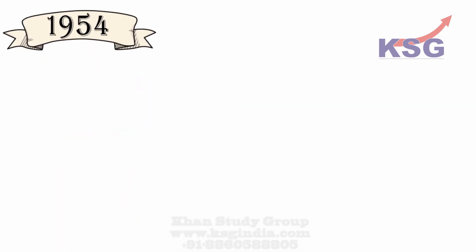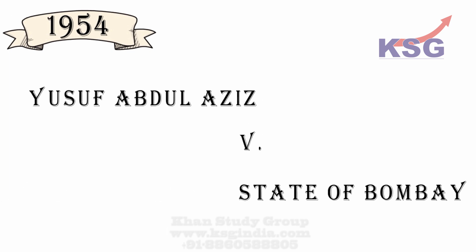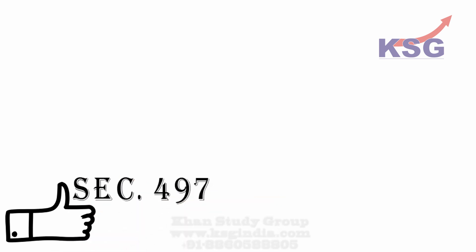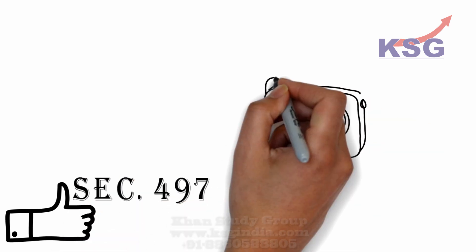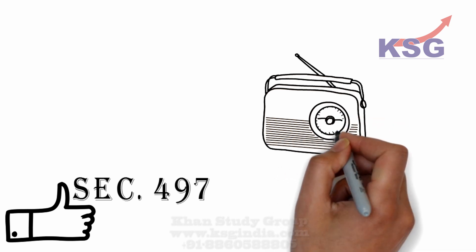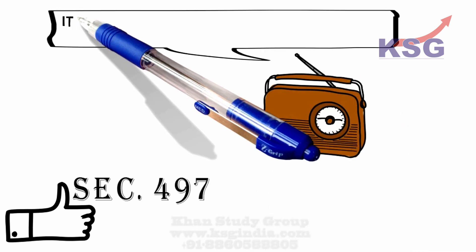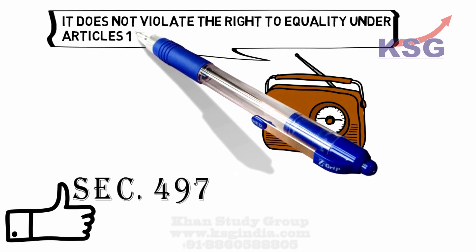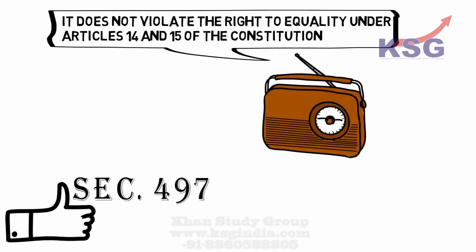In 1954, a Constitution Bench of five judges of the Supreme Court in the case Yusuf Abdul Aziz versus State of Bombay upheld Section 497 IPC and had held that it cannot be said to violate the right to equality under Articles 14 and 15 of the Constitution, in view of the special provisions in favor of women and children in Clause 3 of Article 15.